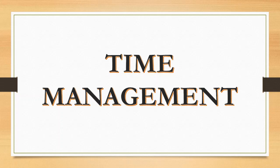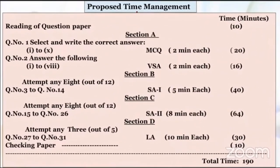Now let us see how to do time management for this paper. Reading of question paper: 10 minutes. Section A, Question 1 — select and write the correct answer, 1 to 10 MCQs. For each MCQ you should take 2 minutes each, total time 20 minutes. Question 2, 1 to 8 very short answer type — each question you should take 2 minutes each, total time 16 minutes.